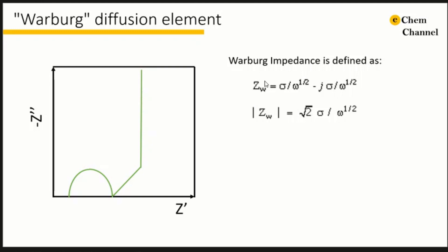The equation for a Warburg impedance is given here. In these equations, sigma is the Warburg coefficient and omega is the frequency. The Warburg equation indicates that the magnitude of the Warburg impedance is inversely proportional to the square root of the frequency.